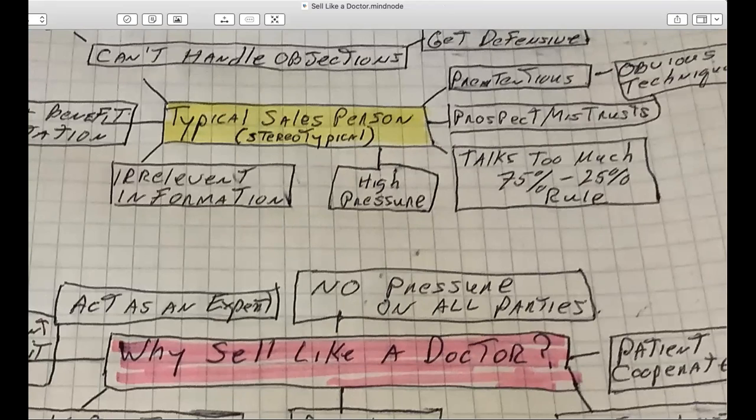Like that fake rapport, that fake scarcity of like, oh, I can't guarantee this deal is going to be available for you. The prospect knows they have way too much access to information. If you're going to take away a deal from a prospect, you have to do it with finesse. You have to, like I said, like a doctor.